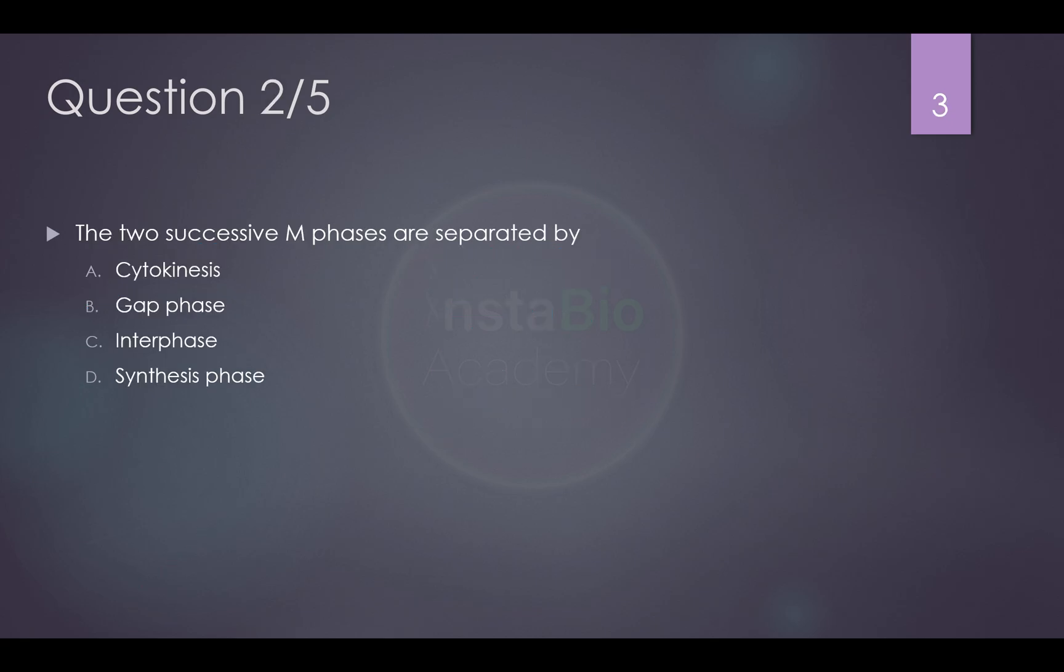So the next question is, two successive M phases are separated by. So let's say, this is the whole cell cycle, M phase is just a small part. And the rest of this is called interphase.